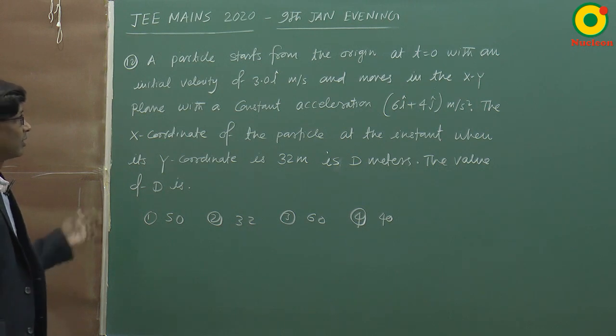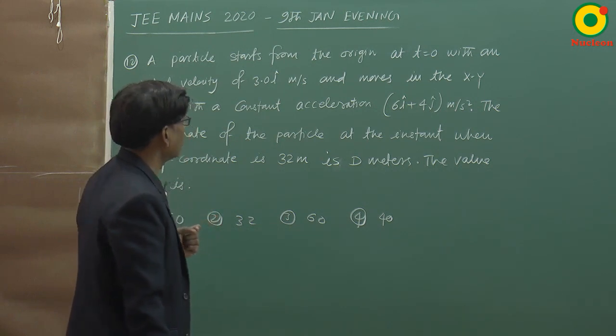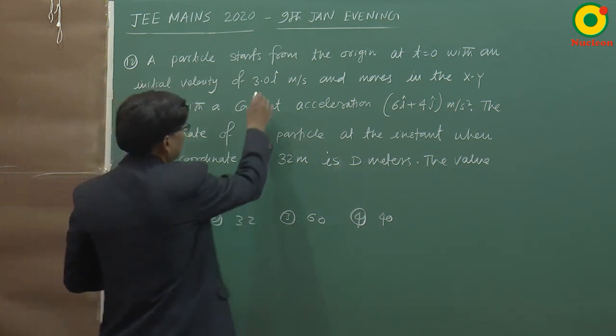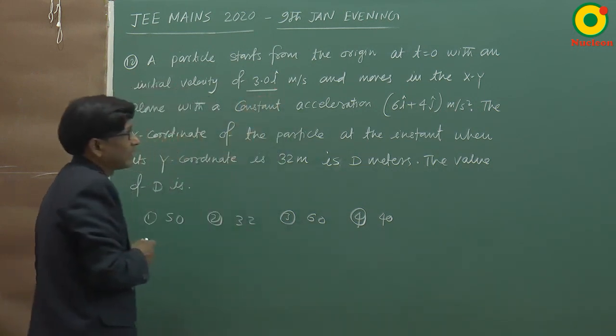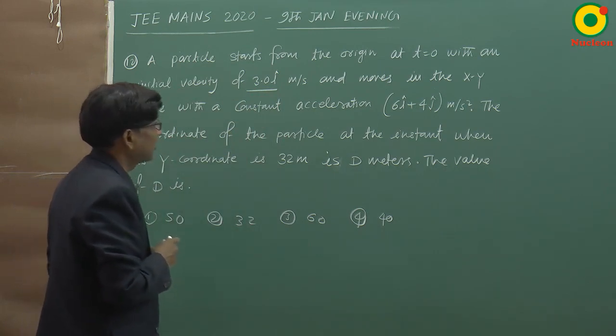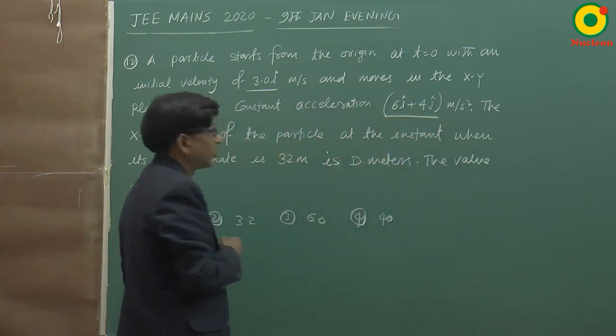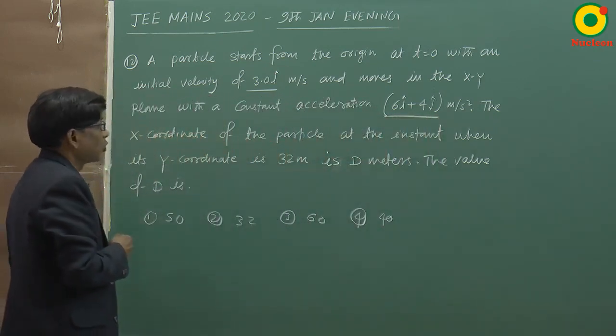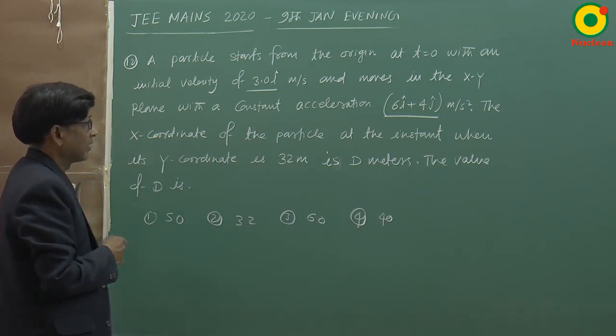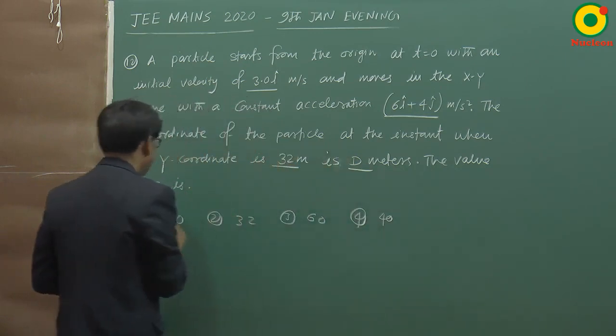Agla sawal kinematics ka hai, a simple formula-based question. A particle starts from the origin at t=0 with an initial velocity of 3.0 i cap meter per second and moves in the xy plane with a constant acceleration of 6 i cap plus 4 j cap meter per second square. The x coordinate of the particle at the instant when its y coordinate is 32 meter is d. Find the value of d.